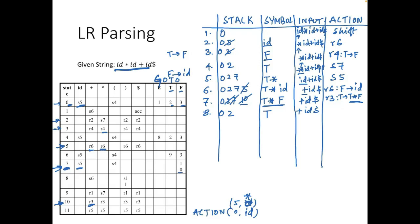Top of stack is 2 and current input is +. action[2, +] is r2. Rule 2 is E → T. So T is reduced to E — one symbol reduced, so one state popped. Top of stack becomes 0. goto[0, E] gives 1, so stack becomes 0, 1. Input remains + id $.